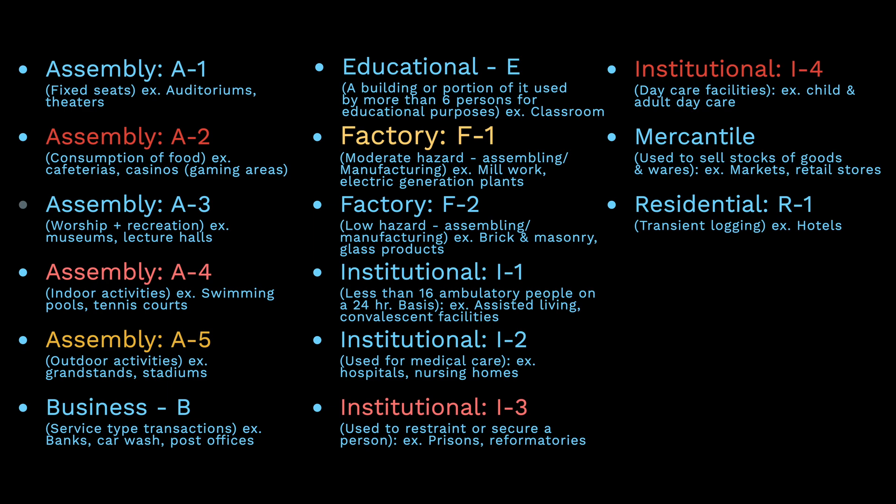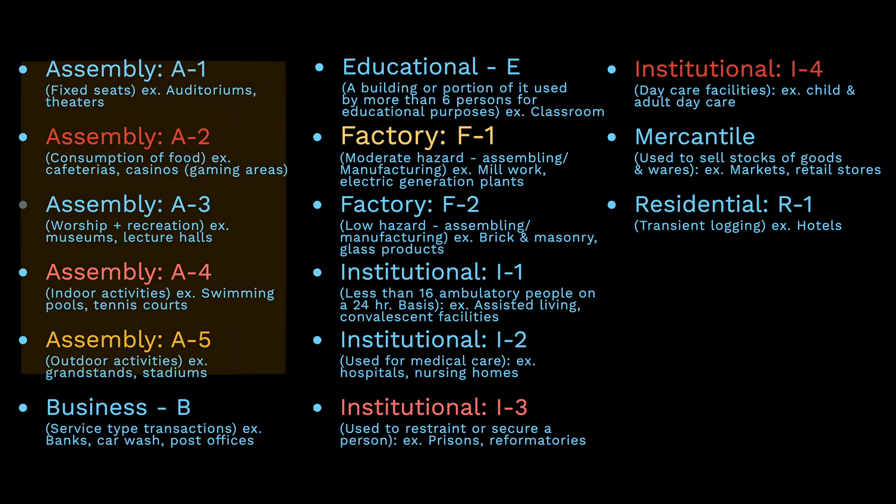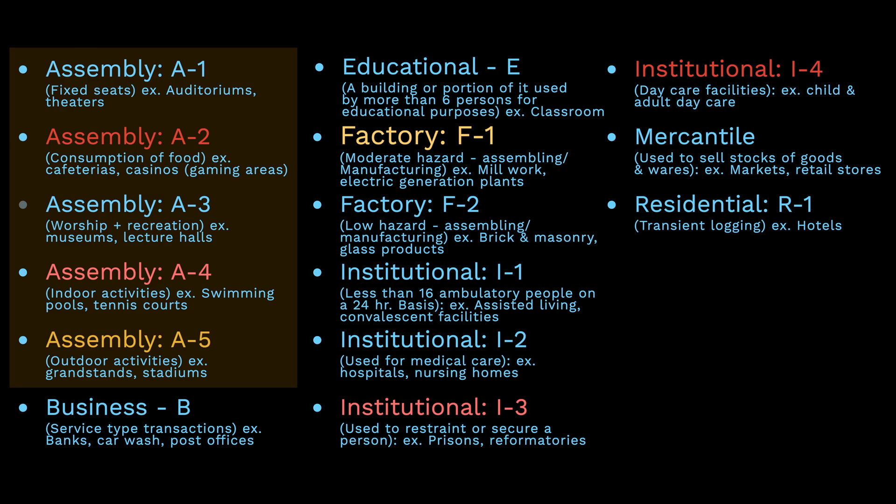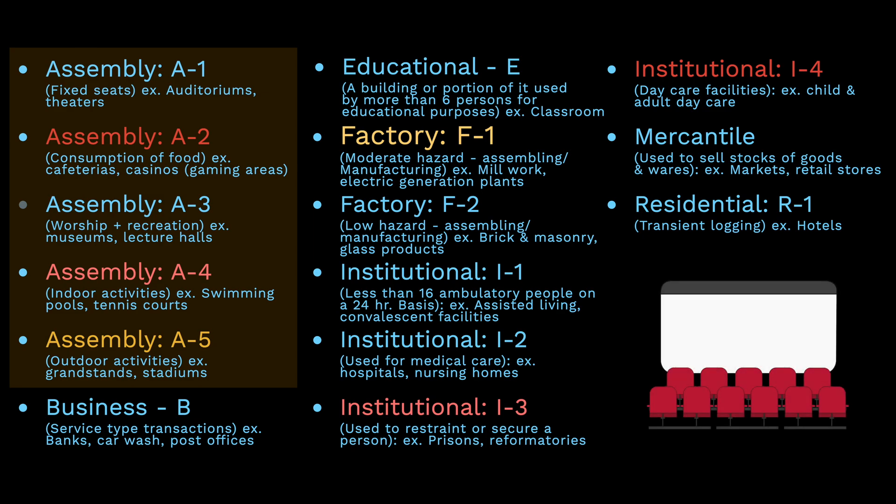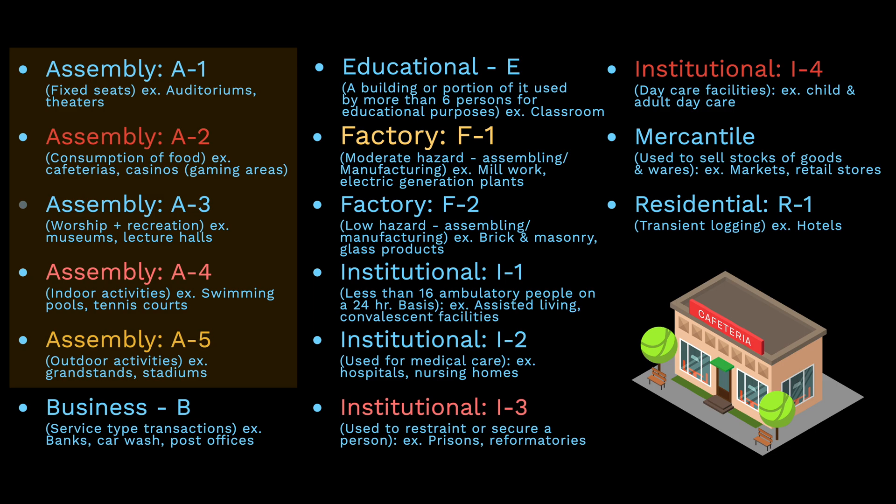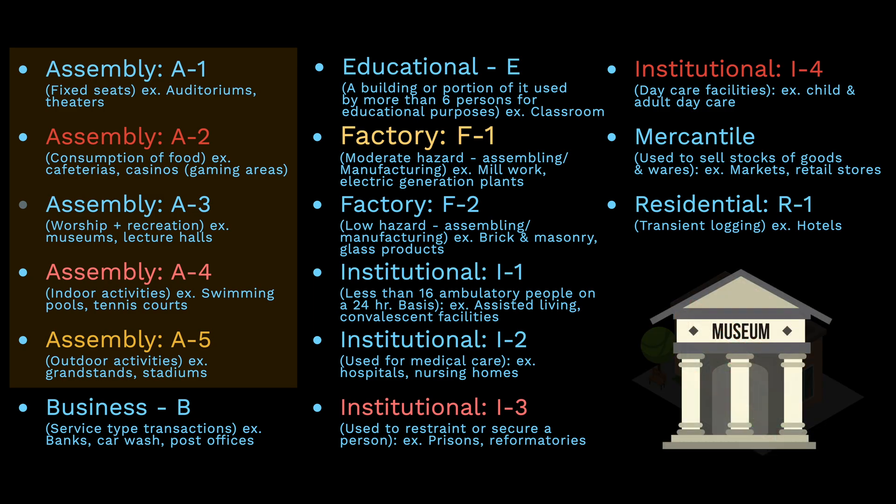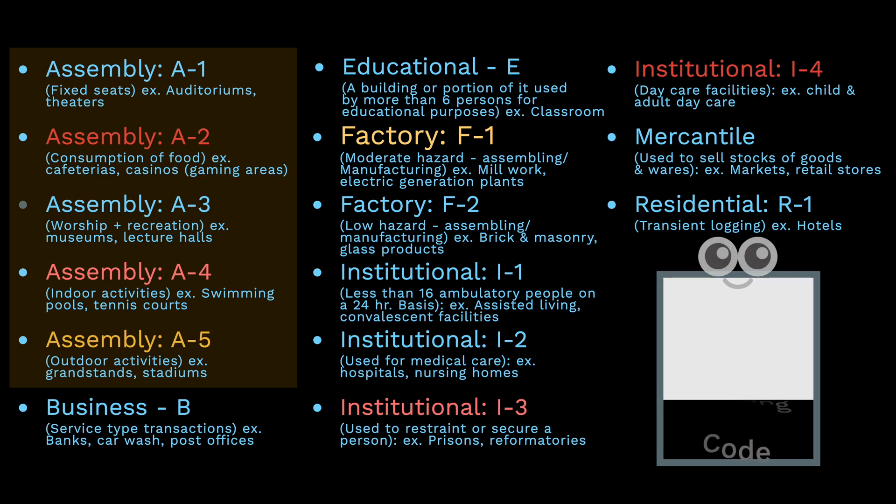For example, the assembly is further divided into five parts. The first pertains to assembly buildings with fixed seats, such as auditoriums and theaters. A-2 are cafeterias and casinos. A-3 are museums and lecture halls, and so on. You can refer to the building code and read further about the examples of these.